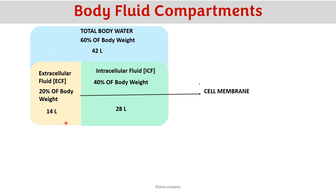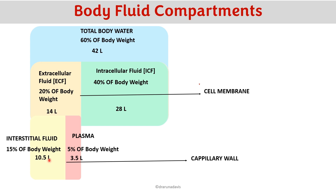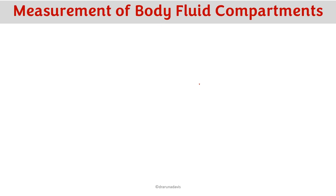The extracellular fluid — water present outside the cell — can be divided into two categories: interstitial fluid and plasma, separated by the capillary wall. Blood or plasma is inside the blood vessels, while fluid outside is called interstitial fluid. Of the 14 liters of ECF, around 15% of body weight (10.5 liters) is interstitial fluid, and 5% (3.5 liters) is plasma.